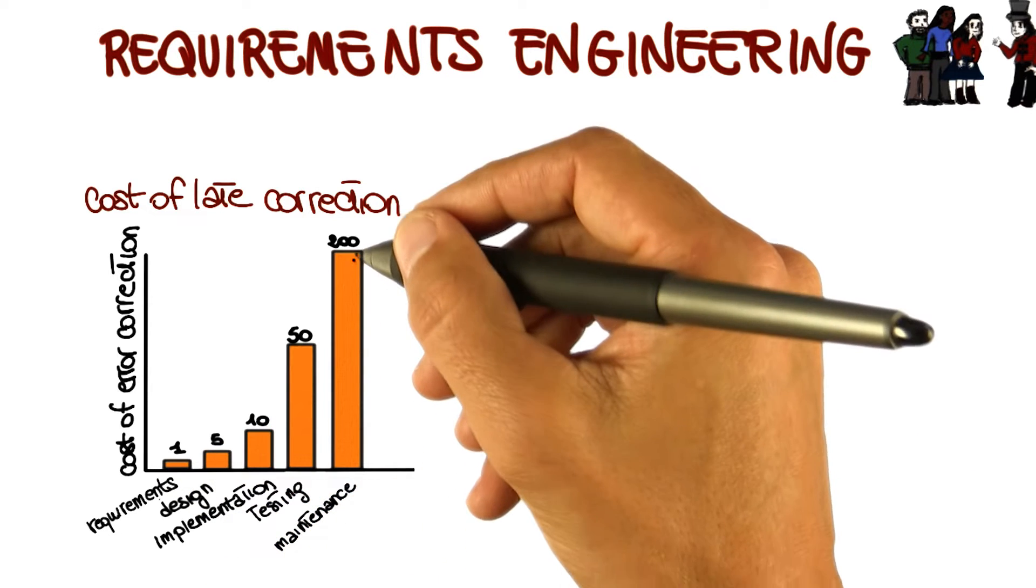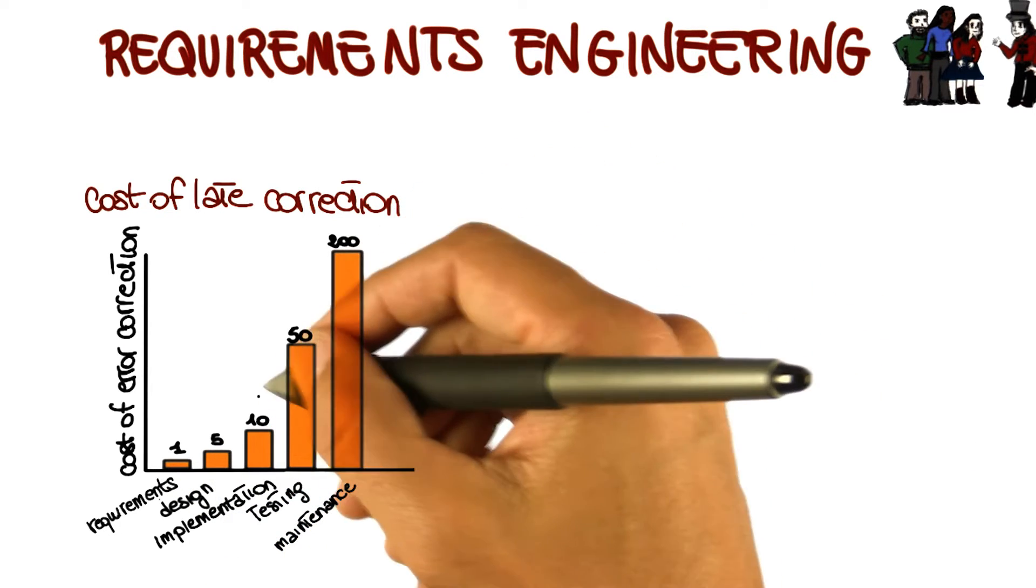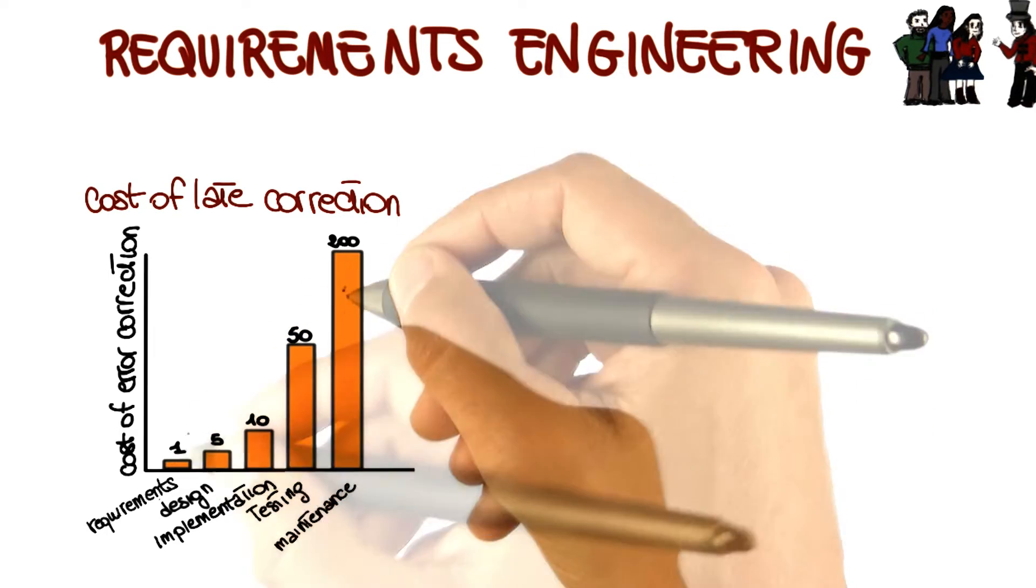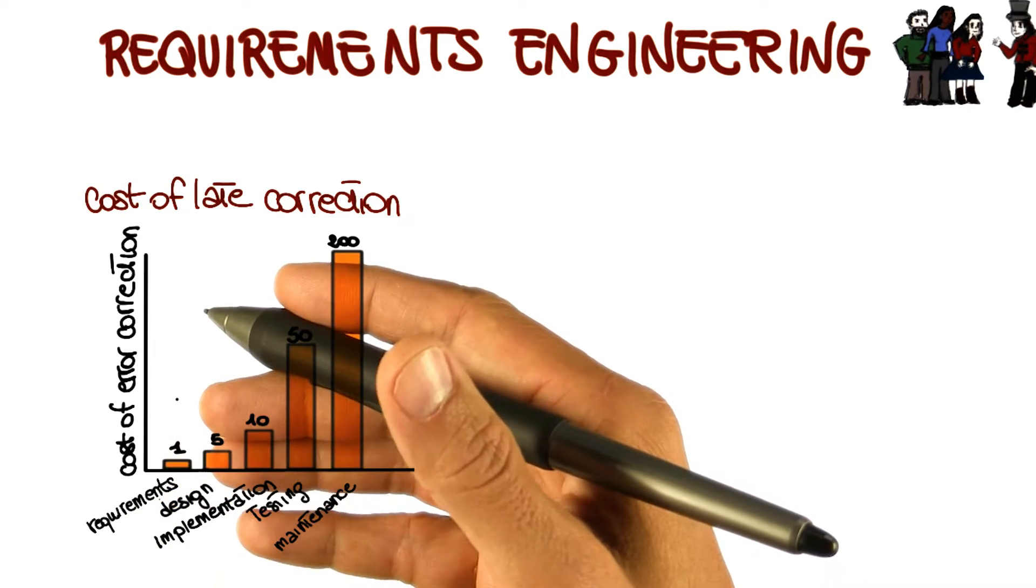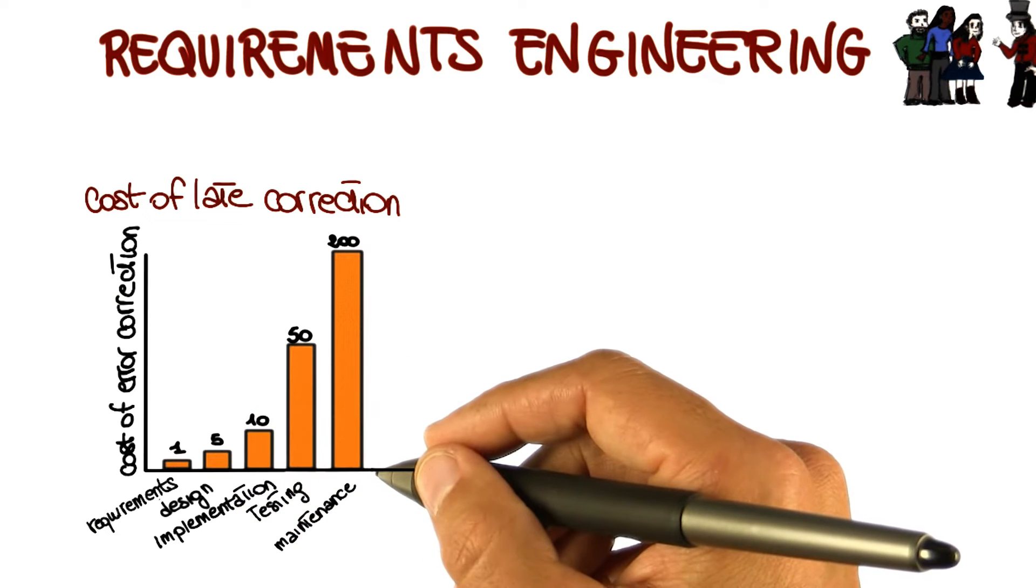Why? Because if we discover a problem here, we'll have to undo a lot of the decisions we have made to correct the error. Whereas if we find an error here, we can correct it right away and we don't affect the subsequent phases.